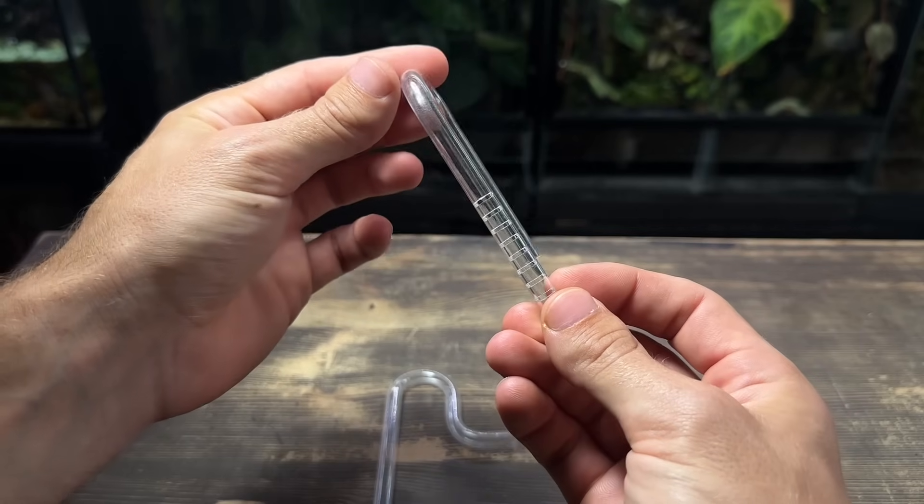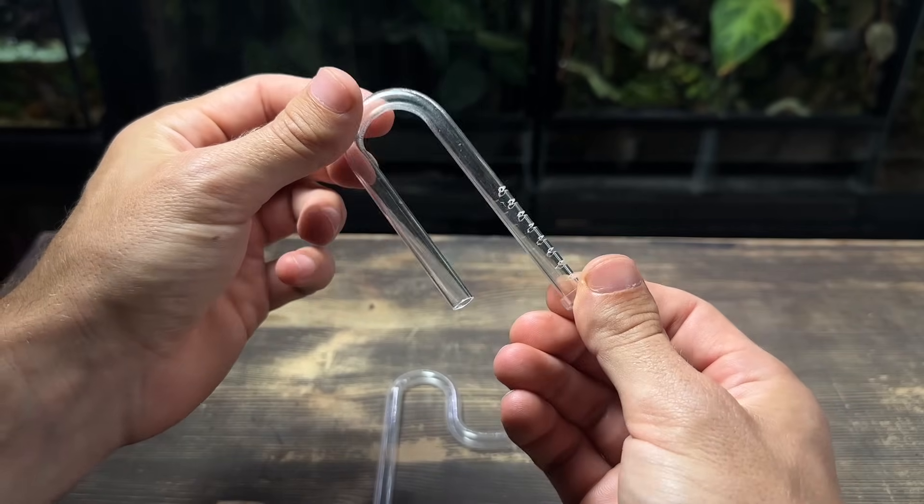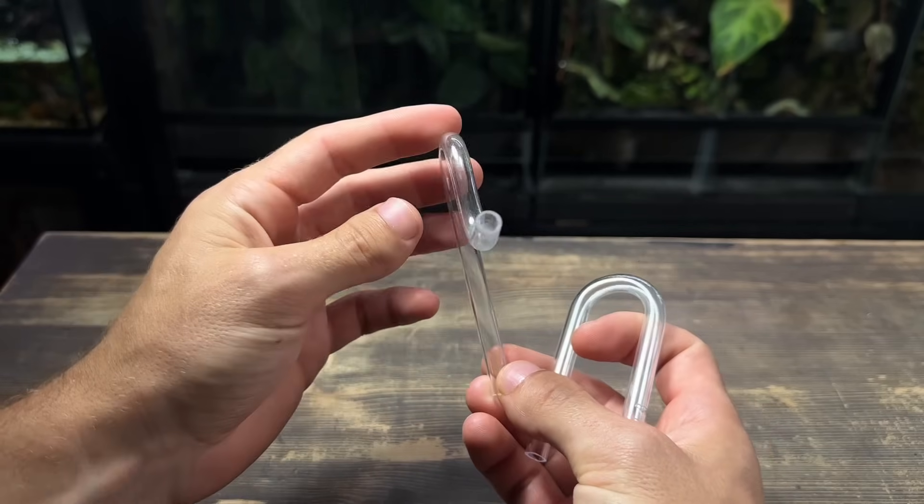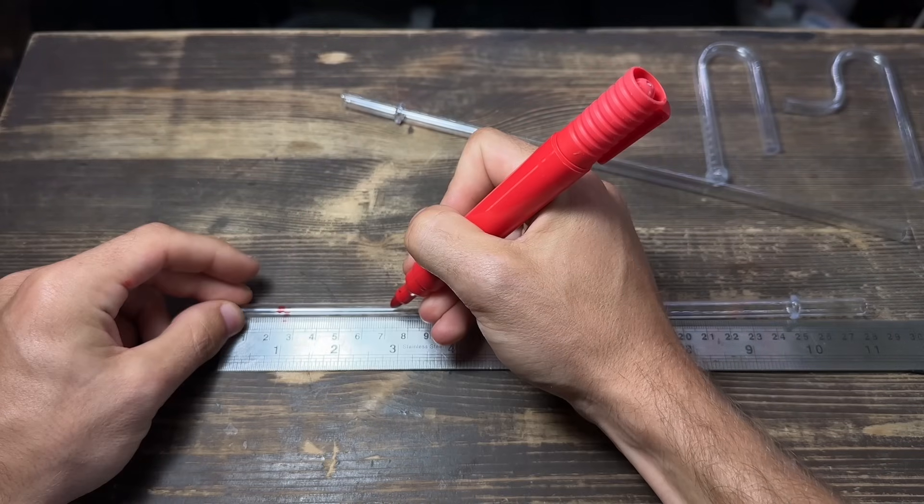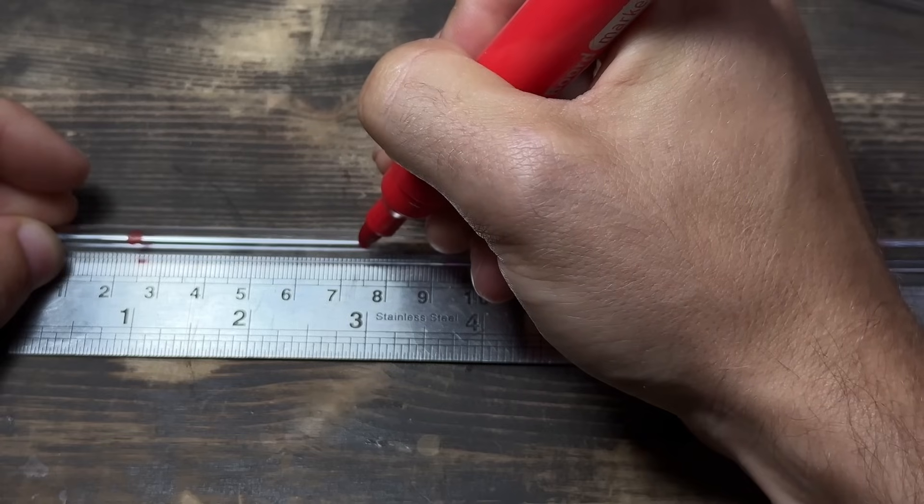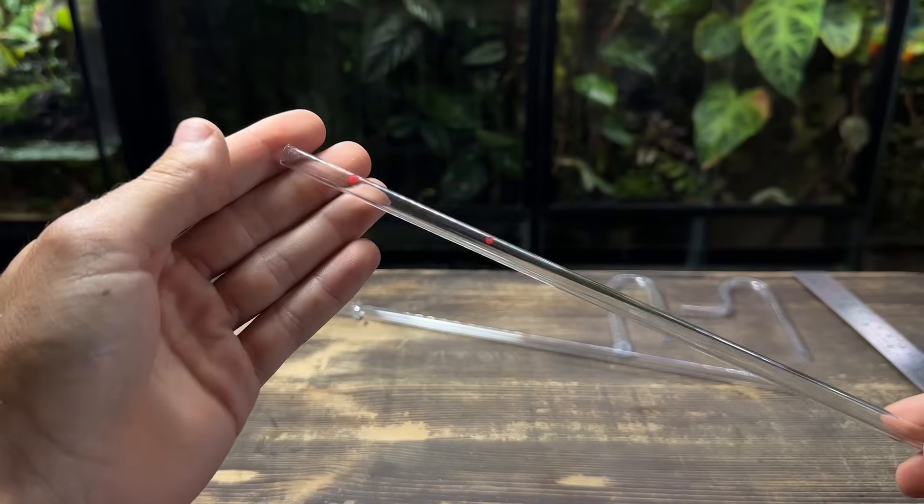With that done let's now make these micro intake and output pipes. I'll make the output first and start by marking down some measurements. I'm going to make a mark at two and a half centimeters and seven and a half centimeters. Make sure to use something like a whiteboard pen and not a permanent marker.